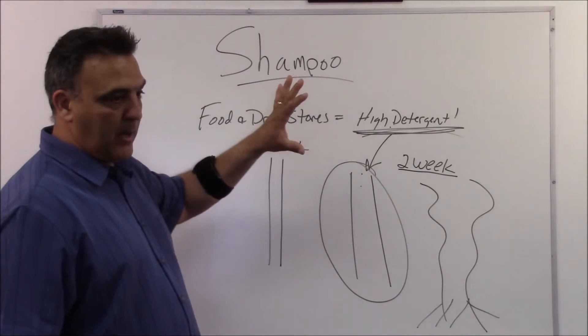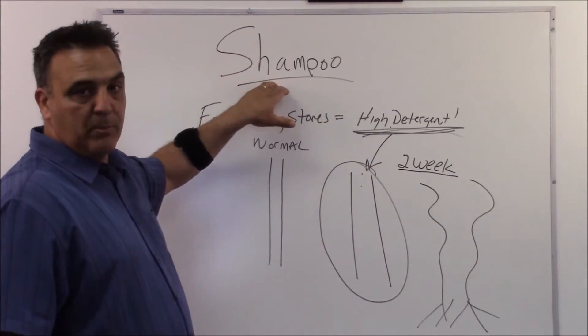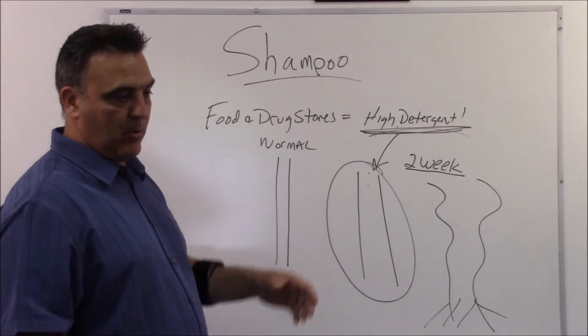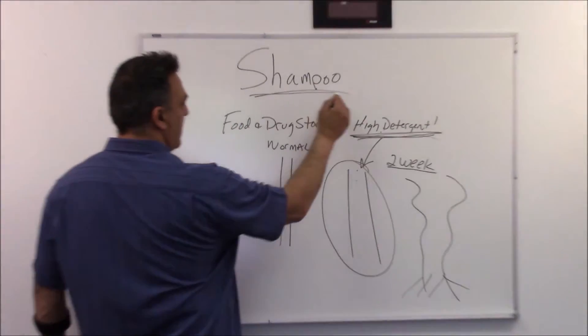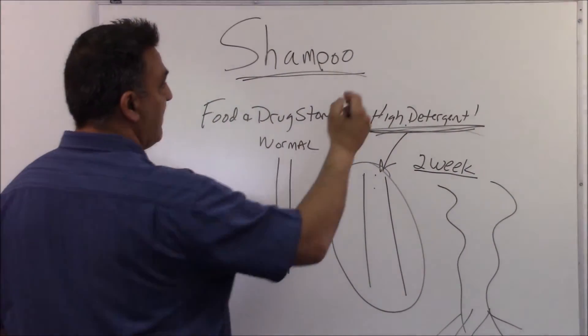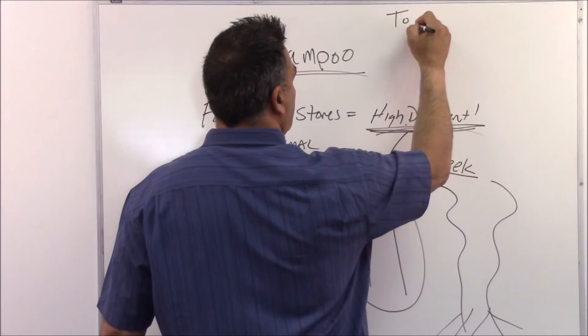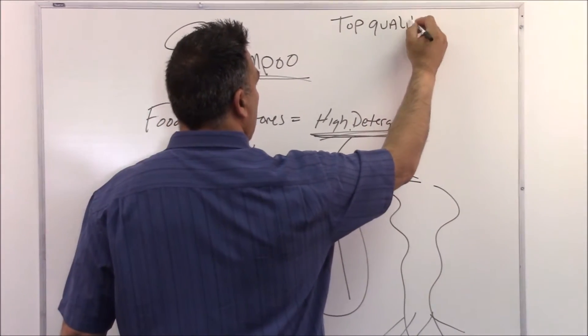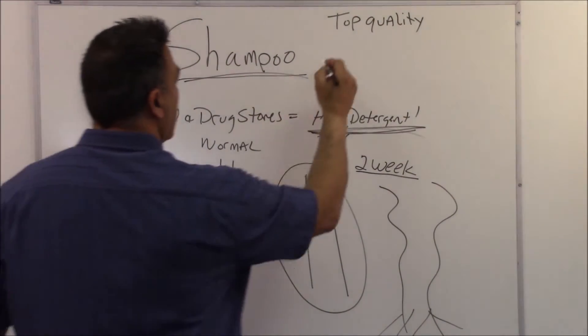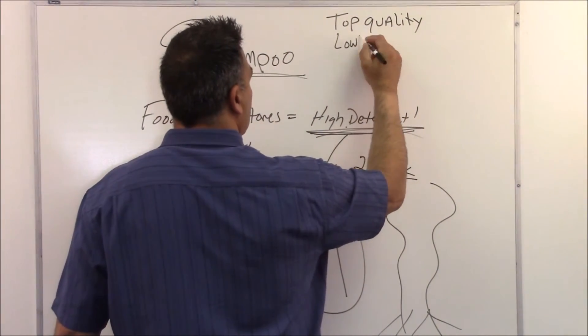The whole basis for my product concept is that this is the most important product in order to start to build healthy hair that's manageable. You have to start with shampoo. Now my stuff, and I'm in the shampoo business, but my stuff is top quality, number one. Now there are other lines out there also that are top quality. Mine is also a low detergent.